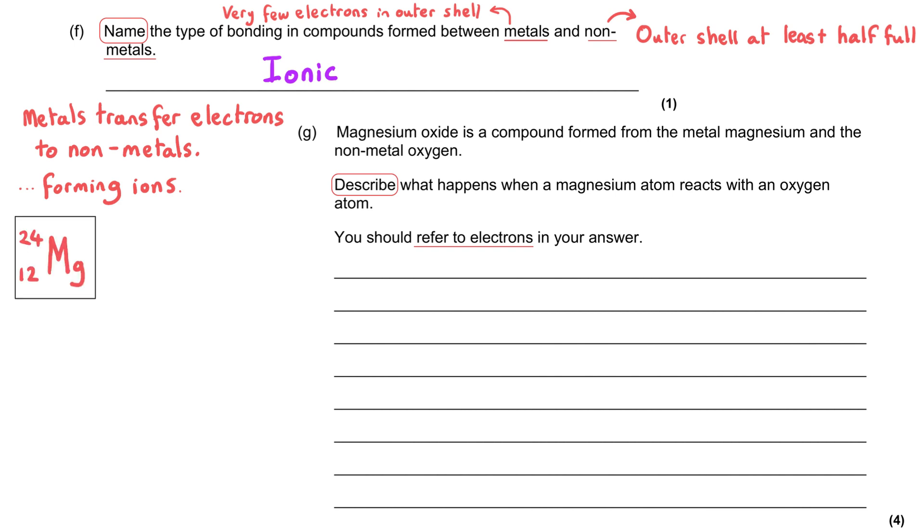And so magnesium has got an atomic number of 12, that means 12 protons and 12 electrons. And so there will be two electrons in the first shell, eight in the second, and two in the outer shell. Oxygen has got an atomic number of eight, so it will have two electrons in the first shell and six in its outer shell.